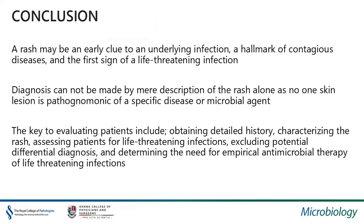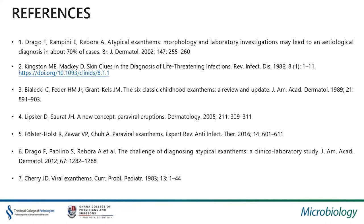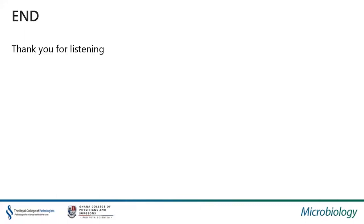In conclusion, a rash may be an early clue to an underlying infection, and could be the first sign of a life-threatening infection. Diagnosis cannot be made by mere description of the rash alone, as no skin lesion is pathognomonic of a disease process or specific microbial infection. The key to evaluating such patients includes taking a detailed history, characterizing the rash as much as possible, assessing the patient for life-threatening infection, excluding important differentials, and determining the need for empirical antimicrobial therapy for any life-threatening infection that may be present or underlying the rash. Thank you for listening.